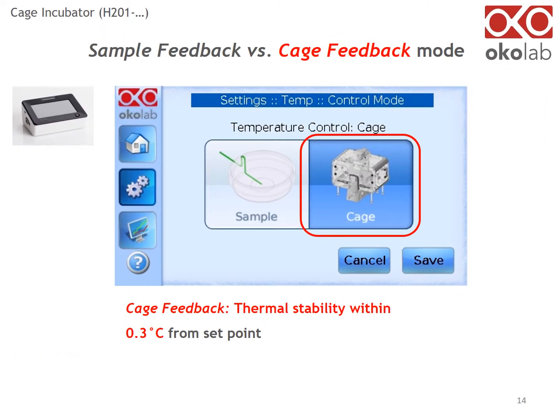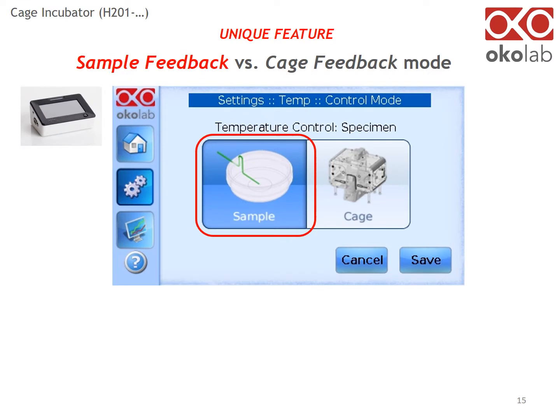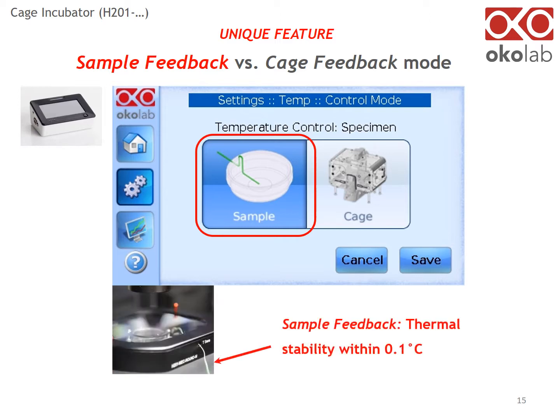Operation in cage feedback mode offers thermal stability within 0.3 Celsius from your set point. Additionally, you can operate in sample feedback mode by inserting a thermocouple in a reference well. Operating in sample feedback mode ensures thermal stability within 0.1 Celsius from your set point.